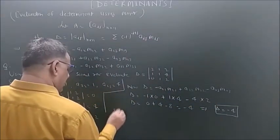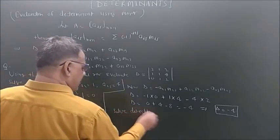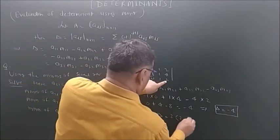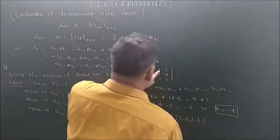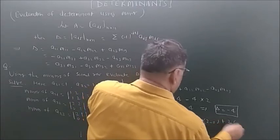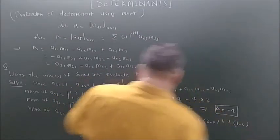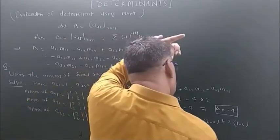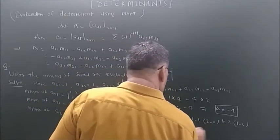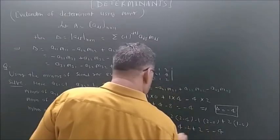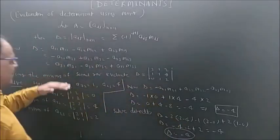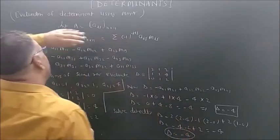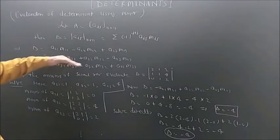To verify, solving the determinant directly: D equals 2×(1×2 minus 4×1) minus 1×(1×2 minus 4×0) plus 2×(1×1 minus 1×0), giving 2×(minus 2) minus 1×2 plus 2×1 equals minus 4 minus 2 plus 2 equals minus 4. So D equals minus 4, confirming the result. This is the method for evaluating a determinant using the minor of any row or column.